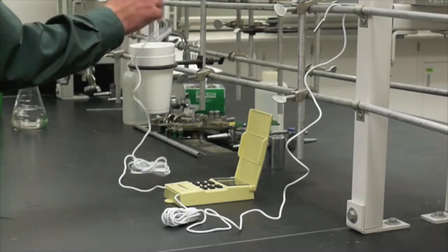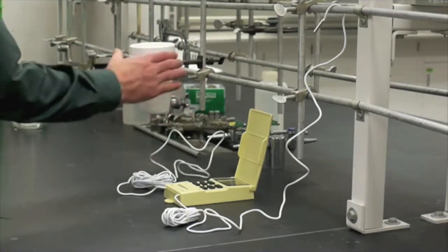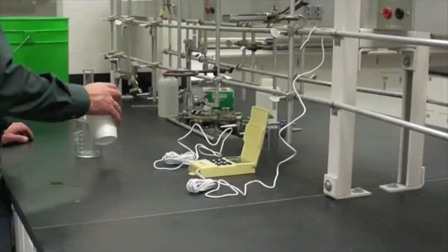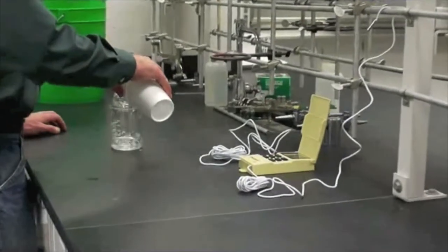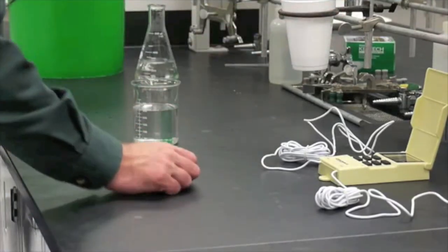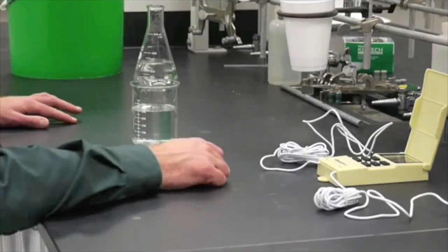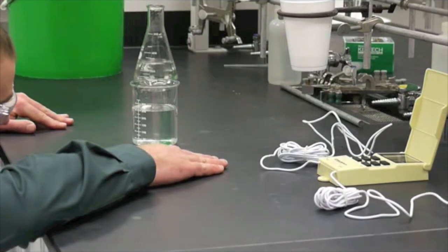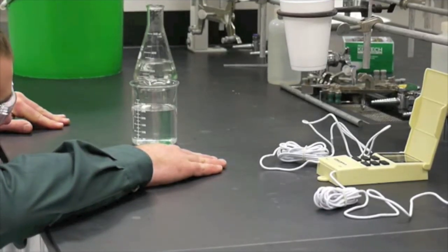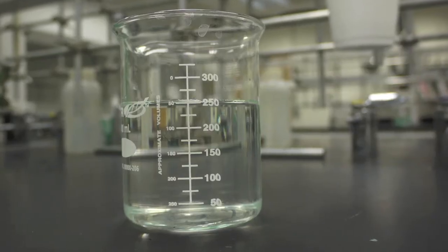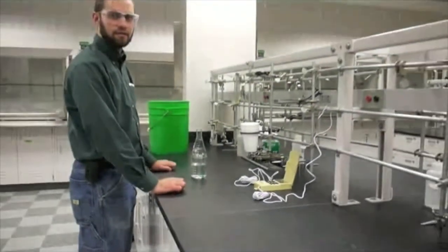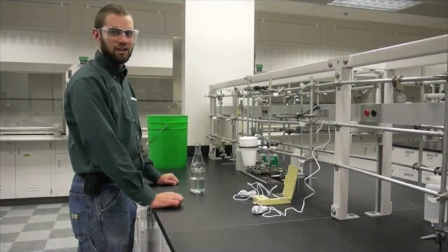Now we will take out the temperature probe, take the cup of water, and pour all the water into the beaker in order to measure the total volume of water, the original water plus the water that came from the ice melting. It appears that this is right about 255 milliliters. We are now finished with the experiment.